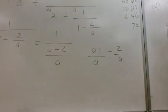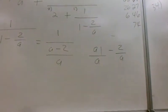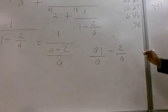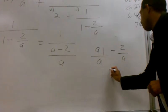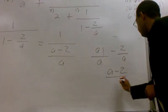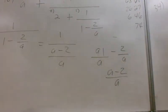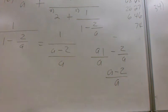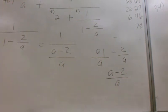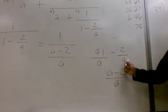That's going to give me a minus 2 over a. So this is simply a minus 2 divided by a. Anytime you have a common denominator, you only write the common denominator one time.